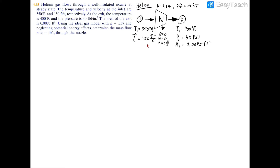Since we have velocity on the left side and area on the right side, I'm thinking we can use the energy balance equation to find the velocity at the exit, and then use the mass flow rate equation: m-dot equals area times velocity divided by specific volume. We'll apply this at the exit where we have the area. Since there's one inlet and one exit, m-dot-1 equals m-dot-2, so we fill in subscripts: A2, V2, and specific volume 2.